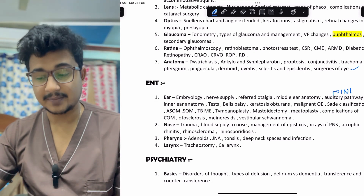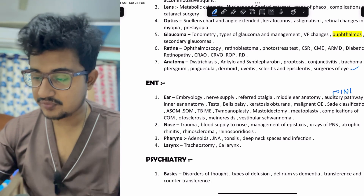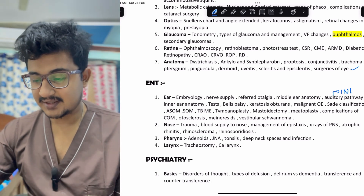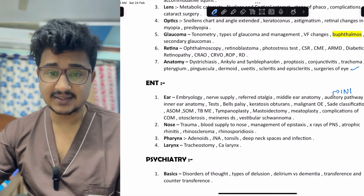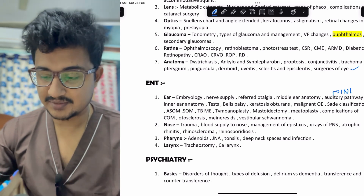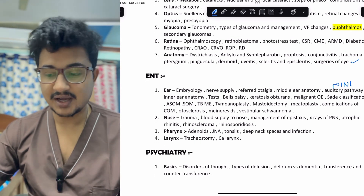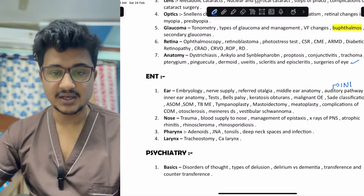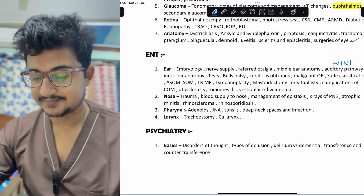In nose, the blood supply of the nose is very important, more so for INI CET as well. In pharynx, JNA, tonsils, deep spaces and infections are very important. In larynx, tracheostomy was asked, and for CA larynx, the staging should also be remembered for NEET PG and INI CET.